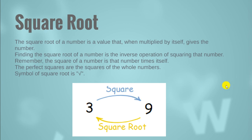Now let's learn about square roots. What are square roots? The square root of a number is a value that, when multiplied by itself, gives the number. Finding the square root of a number is the inverse operation of squaring that number. Since you have already learned squaring in the power portion, this should not be difficult. Remember: the square of a number is that number times itself.